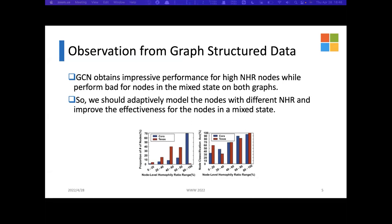Even in the homophily graph Cora, there are about 30% nodes in the mixed state. On the right figure, we show the accuracy of node classification with the GCN model for nodes with different node-level homophily ratios. GCN obtained impressive performance for high node-level homophily rate nodes while suffering a rapid decline in effectiveness for nodes in the mixed state on both graphs.